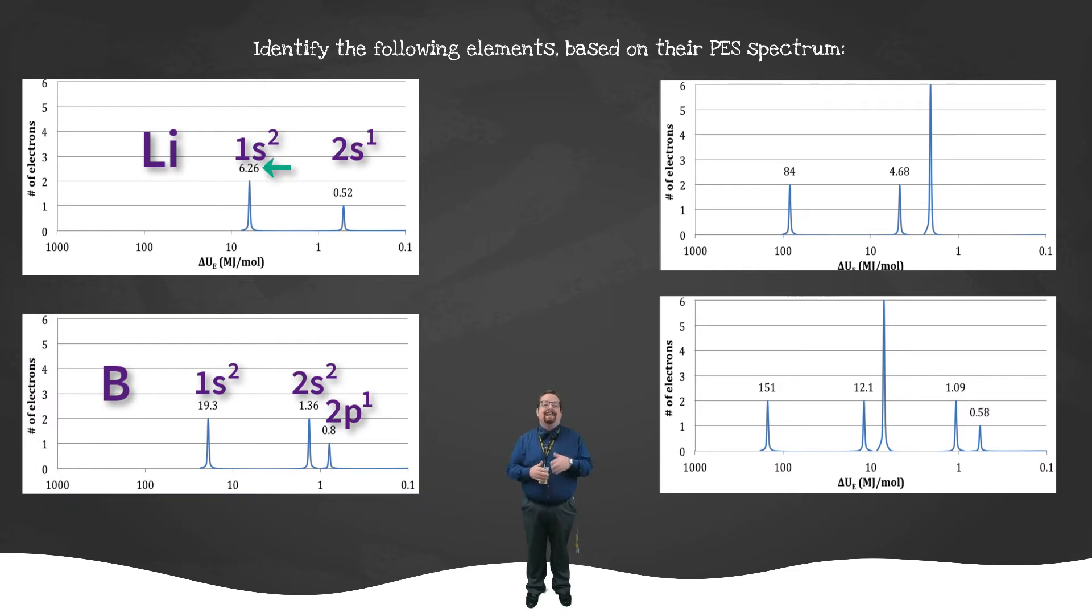Notice the 1s electrons in lithium take less energy to remove than those of boron. Why do you think that is? Well, as we'll see, boron is a smaller atom than lithium is. So the 1s electrons are closer to the nucleus than those in lithium, making them harder to pull away. Try these other two out on your own. I get neon for the top one and aluminum for the bottom one.